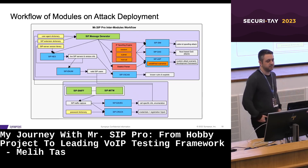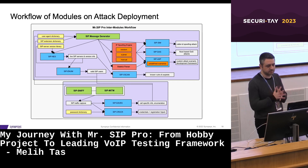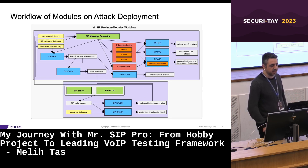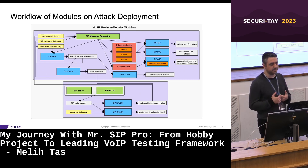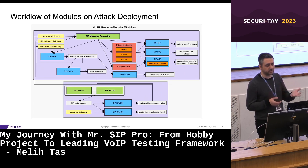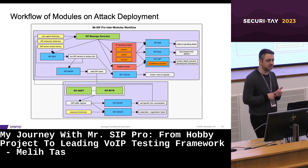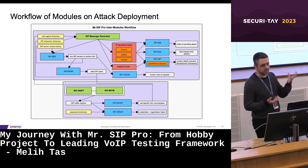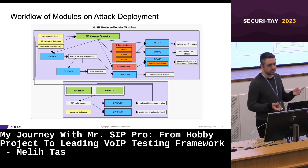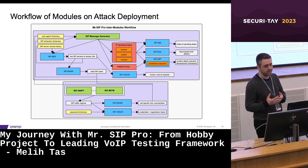This is the workflow of Mr. SIP Pro modules for deploying an attack. Green modules are core modules, blue modules are attack modules, yellow ones are external inputs, and grey modules are outputs. The message generator module feeds the network scanner, enumerator, signaling manipulator, DDoS attack simulator, and attack scenario player. The output of the network scanner is fed as input to the enumerator. The sniffer module, along with the manual attack module, feeds the eavesdropper and cracker modules. The list of valid SIP users is the combination of outputs from the enumerator and eavesdropper, and all these inputs feed the predefined user-agent and SIP extension dictionaries.